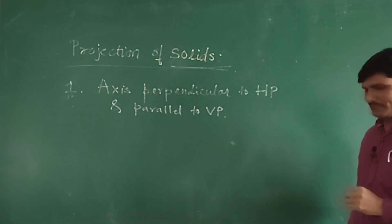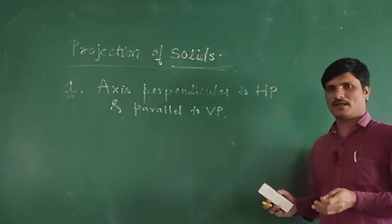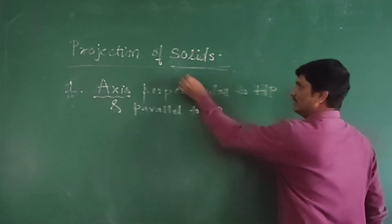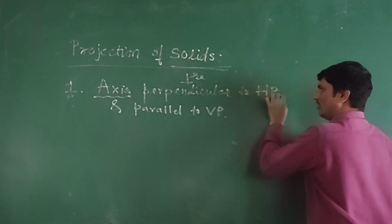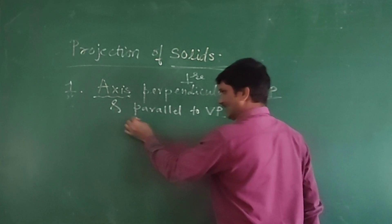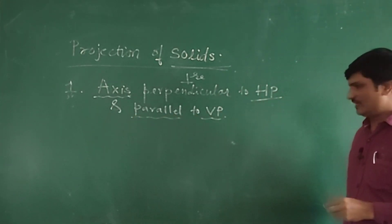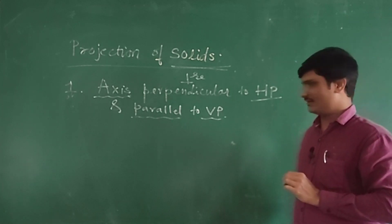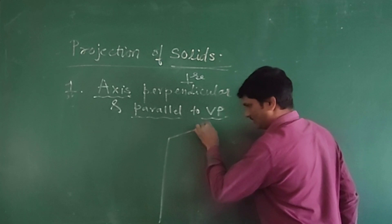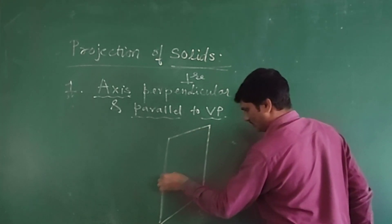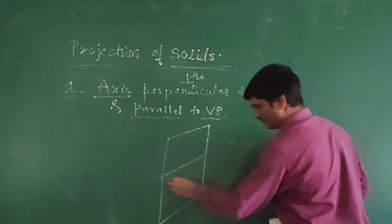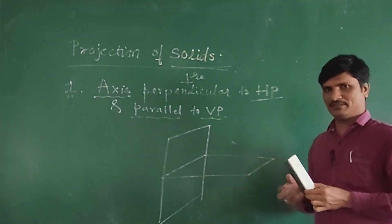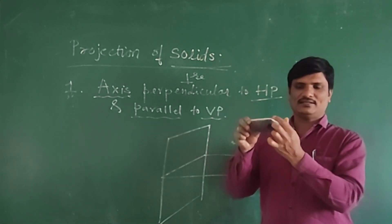So if any solid element's axis is perpendicular to the horizontal plane and the same axis is parallel to VP, that is the first position. If you have the quadrant system, the concept will be very clear. Let us take the first quadrant here.